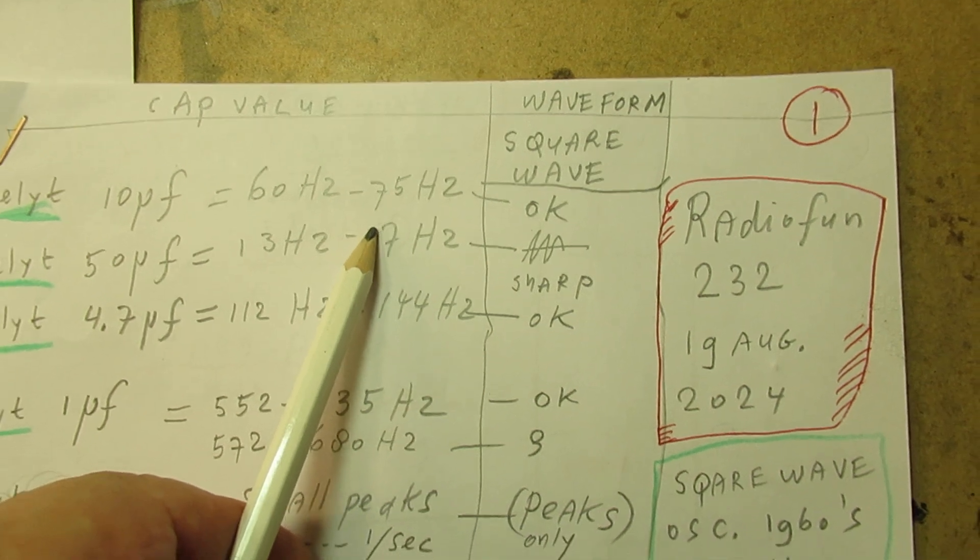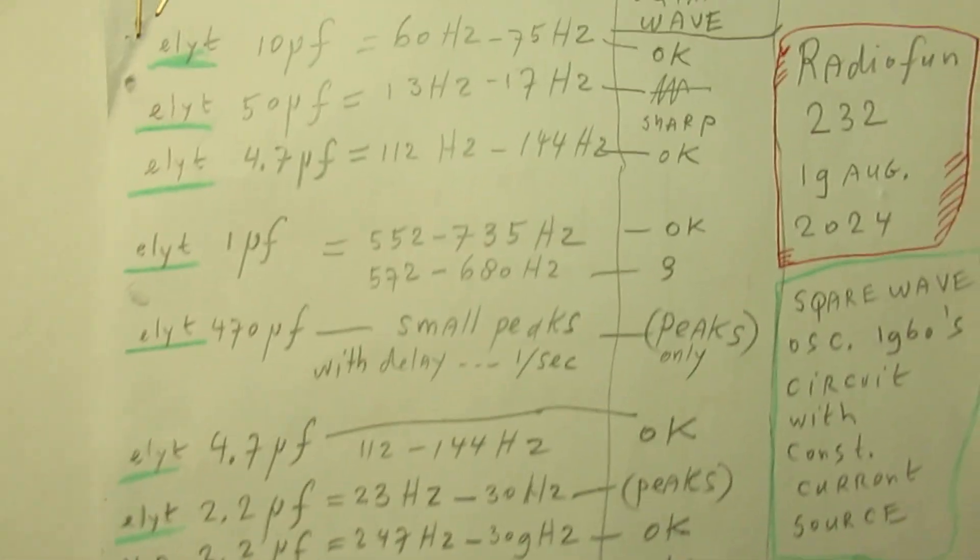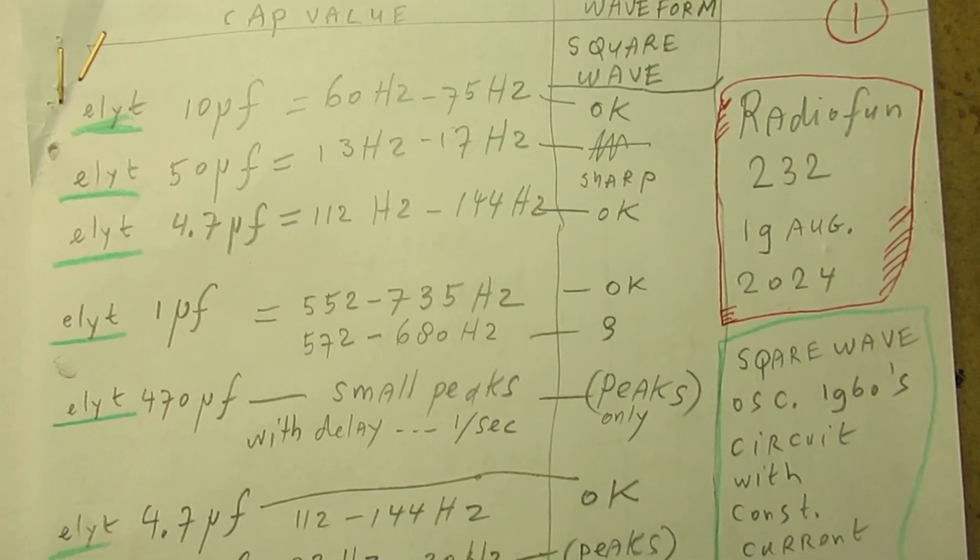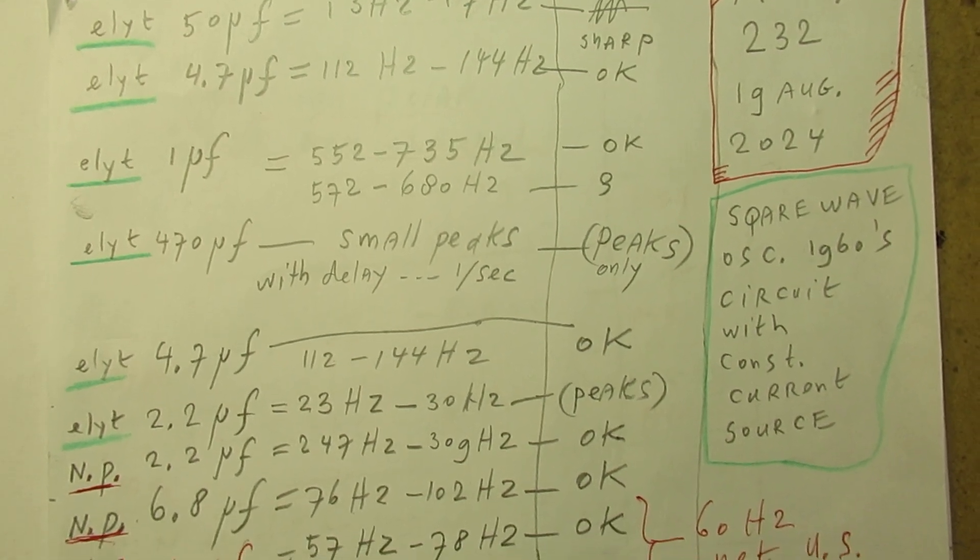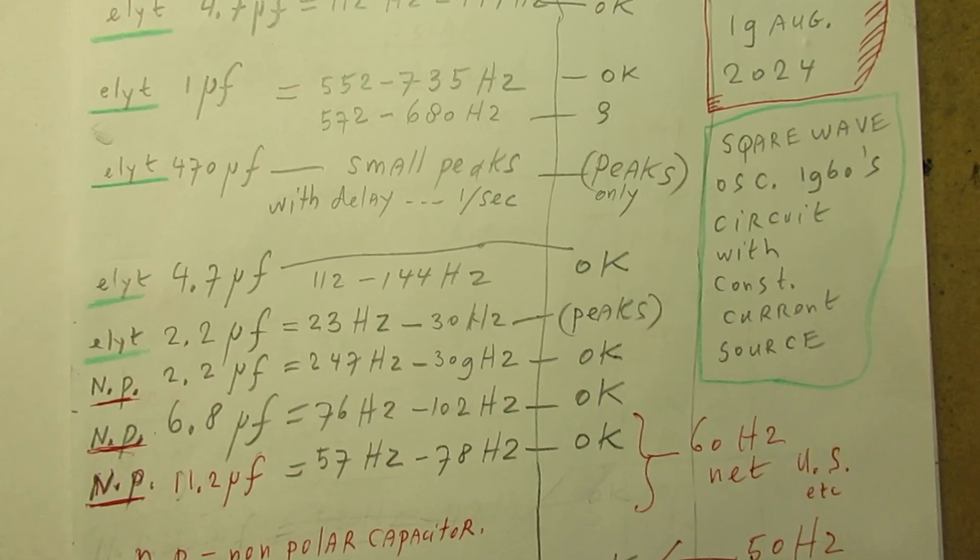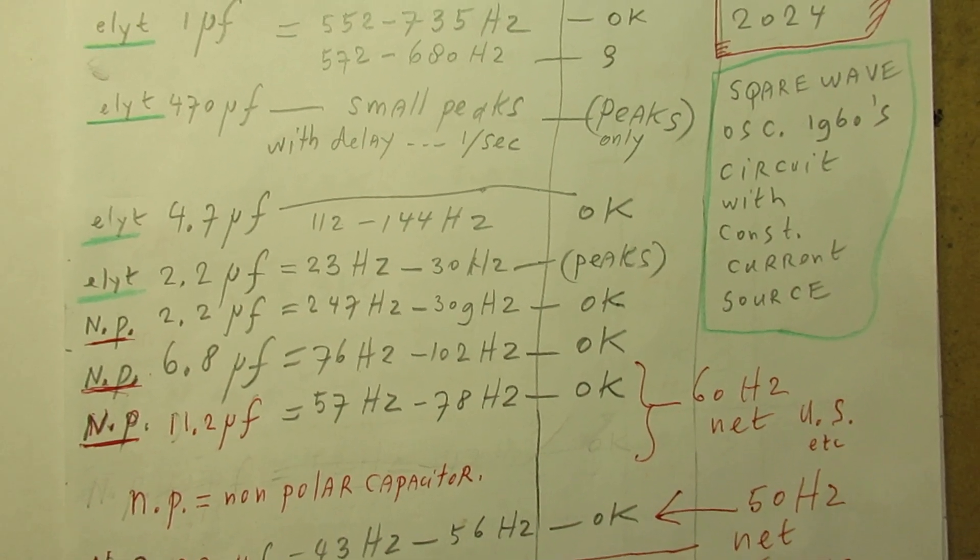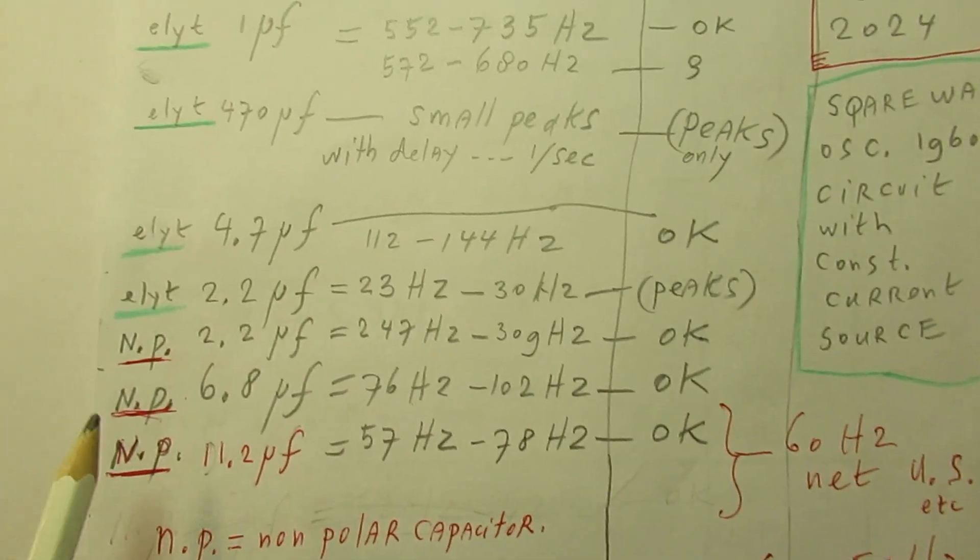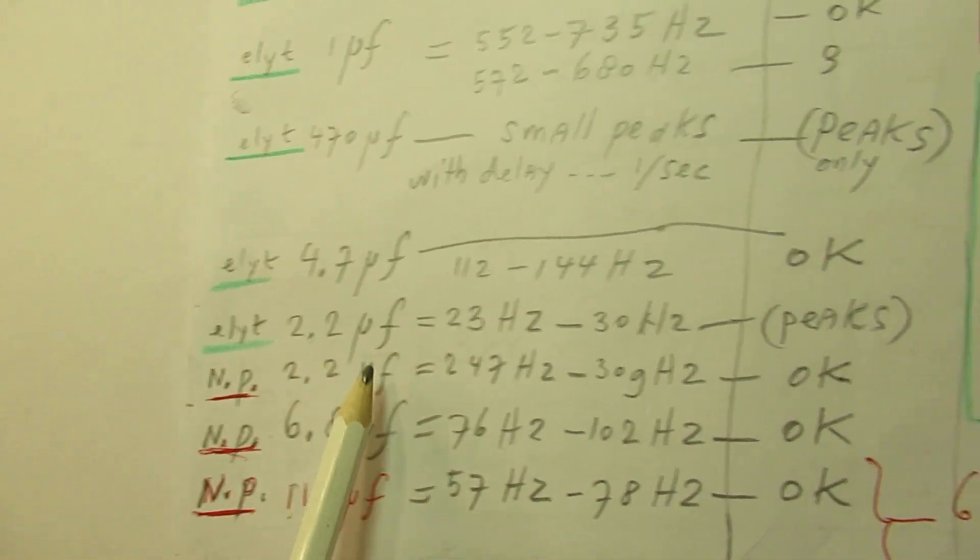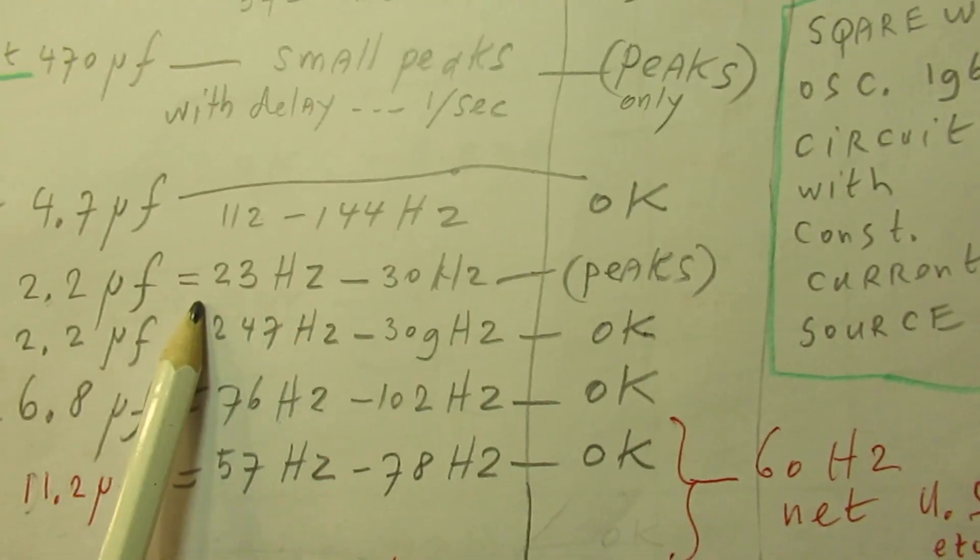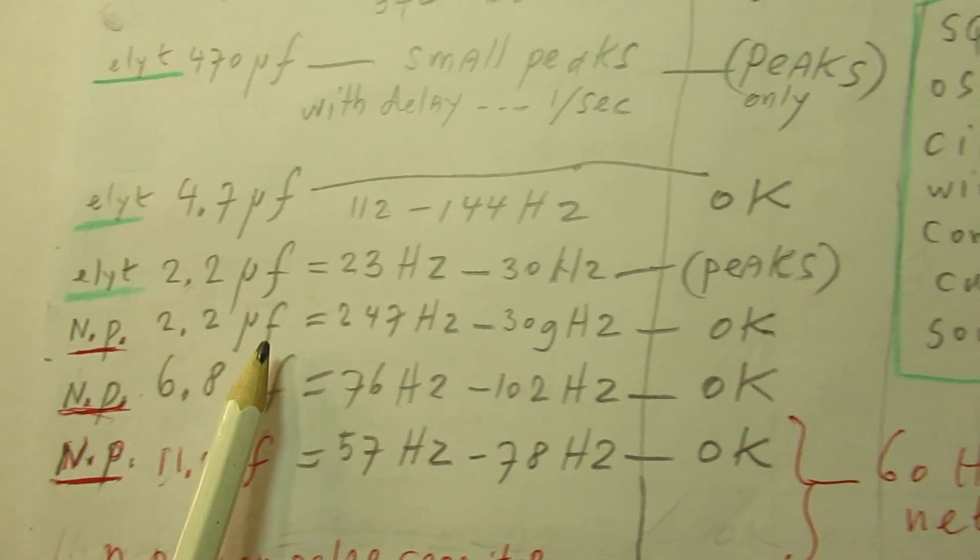We'll pan over a little bit slowly to give a better insight what happens when you connect electrolytic capacitors in this circuit or non-polar capacitors of the same value. For instance, an electrolytic capacitor of 2.2 microfarad gives this range, and a non-polar capacitor of 2.2 microfarad gets to another frequency range.